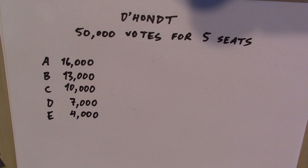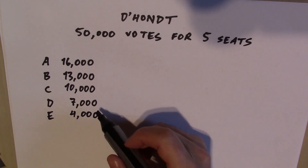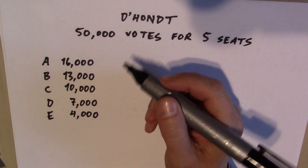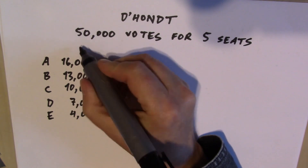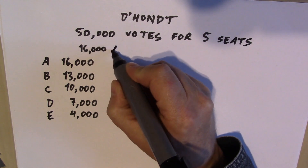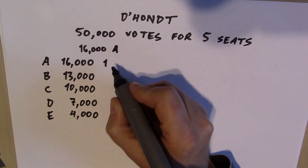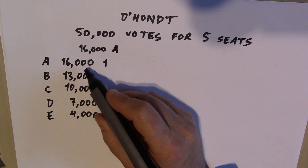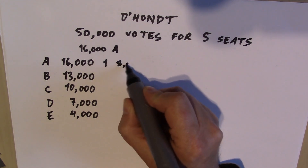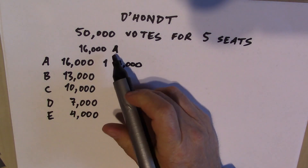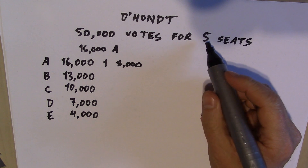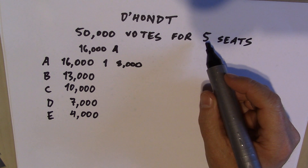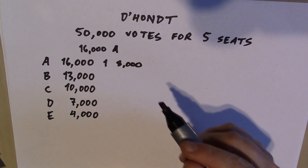Using the D'Hondt method — and this is going to work out to the same result — first we set the price of a seat at the highest number we have. Party A got the most votes: 16,000. So we start by setting the price of a seat at 16,000 votes. Party A gets a seat. Party A has 1 seat and could buy a second seat if the price comes down to 8,000. So we've awarded 1 seat, and we want to award 5, so we have to bring the price down. Using the D'Hondt system, we bring the price down to the next number that will make a difference to results — something lower than 16,000.